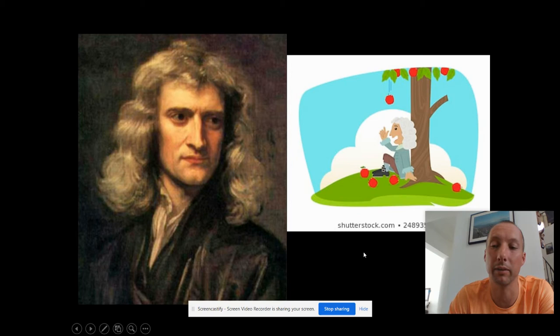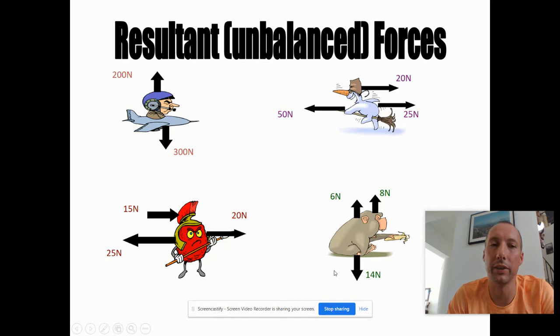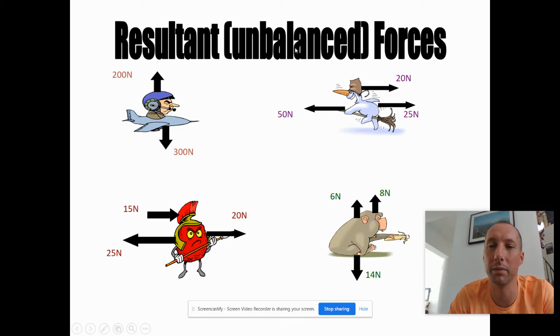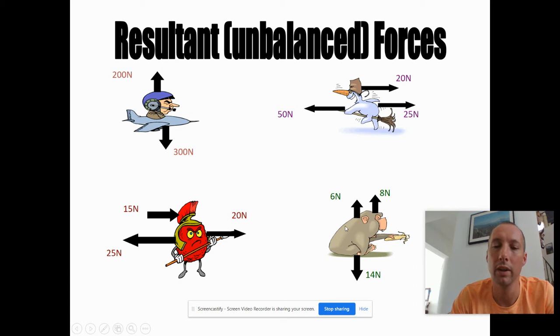He also came up with a theory of gravity and lots of ideas about light as well. So today is going to be about Newton's laws of motion. But before we do, I want to go back over one thing you were supposed to be working on earlier in the week, which is about resultant forces. Resultant force, or unbalanced force, basically means the overall force acting on an object, because in lots of situations it's not just one force pushing or pulling on something - there's more than one.